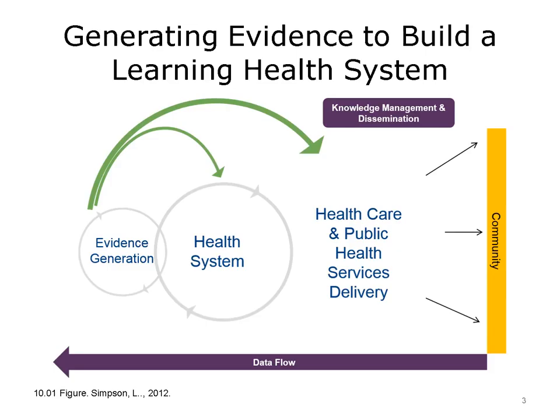Data is important at every touchpoint in a learning healthcare system. Knowledge is power. We need to learn how to glean data at every step to inform decisions made at every level. There's an iterative process to identify projects that are worthwhile. You'll see here that you often start at the community level, moving from right to left in some ways — that's the data flow. We can start to think about population and healthcare, then think about health systems and how we can generate evidence about those.